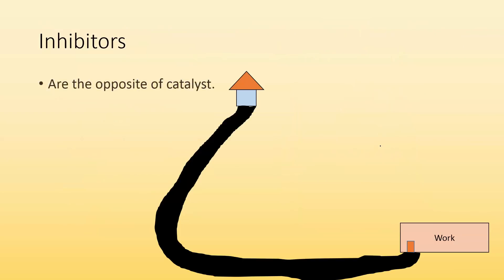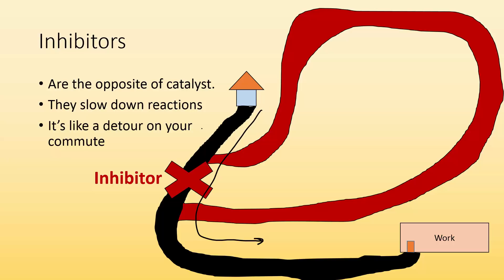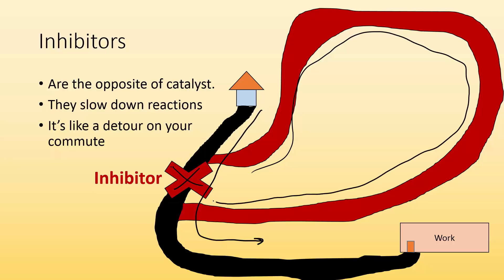Inhibitors are the opposite of catalysts. Sometimes it's important to slow down a reaction — for example, if a reaction releases a lot of energy and you don't want it to overheat. An inhibitor slows it down. It's like a detour on your commute: if your normal path is blocked and you have to go all the way out and around, that takes longer — the reaction slows down.